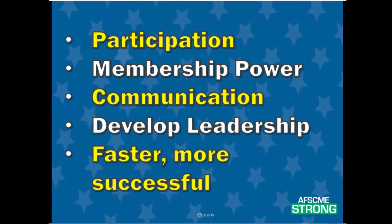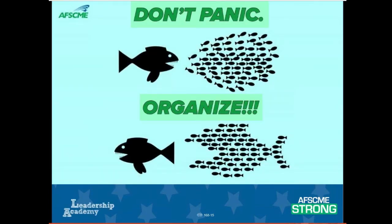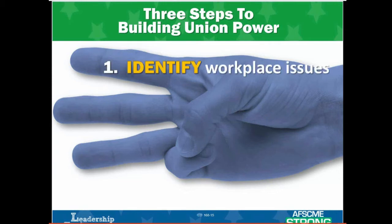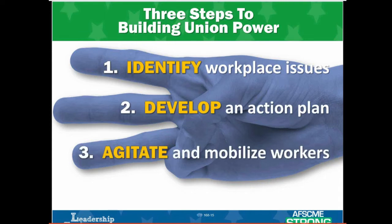Organizing around workplace issues can mean more work for staff or leaders, and it can be more confrontational than some people are used to. But it's worth it to build union power — and that's what workplace organizing is all about. When you break it down, there are really three steps: one, identify workplace issues; two, develop an action plan to move the boss to address those issues; and three, agitate and mobilize workers around those issues.